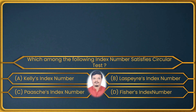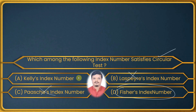This is from the index number chapter. Fisher's index number satisfies both TRT and FRT — that is, the time reversal test and factor reversal test. But the question asks about the circular test. The circular test is not satisfied by Paasche's or Laspeyre's either, so the right answer is Kelley's index number.